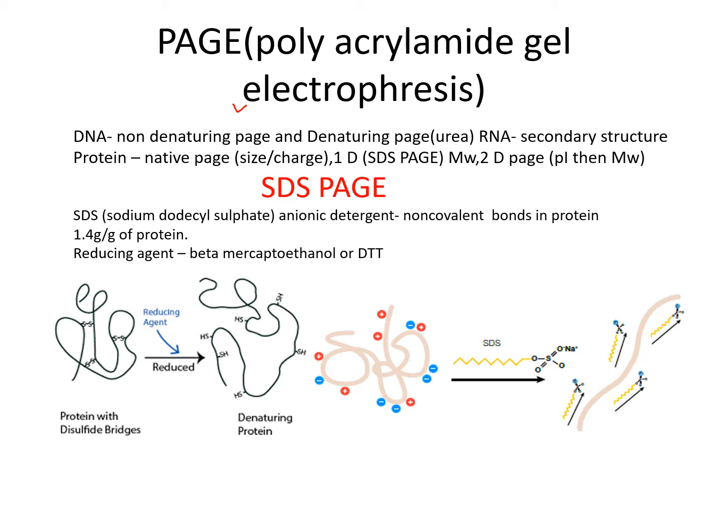PAGE is used to separate DNA of smaller size, RNA, and protein. Less than 75 base pairs of DNA is separated on PAGE. Two types of techniques are used: first is non-denaturing PAGE for DNA, and denaturing PAGE for DNA. In non-denaturing PAGE, no denaturation of the DNA occurs, and in denaturing PAGE, urea is used to denature the DNA and convert double-stranded DNA into single-stranded DNA. It is used where a length difference as small as a single nucleotide can be separated.